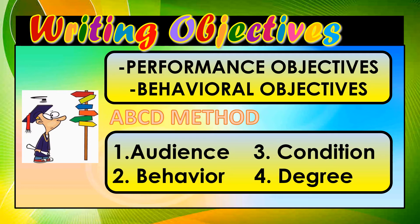The ABCD method of writing objectives specifies four core key characteristics that contribute to effective learning objectives: namely audience, behavior, condition, and degree. This was referenced from Georgia State University, 1999.